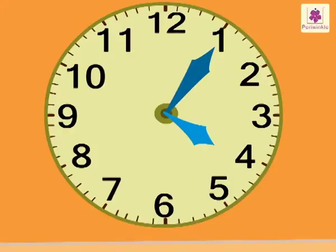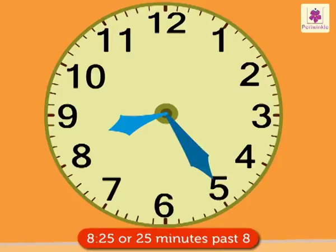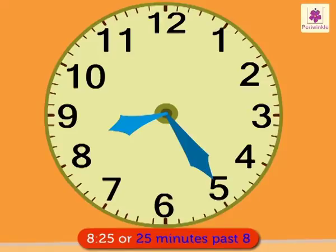Now let's try it once again. The hour hand is between 8 and 9 and the minute hand is on 5. So we read this as 8:25 or 25 minutes past 8. We write it as 8:25 or 25 minutes past 8.